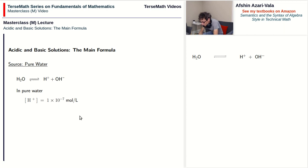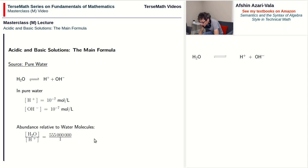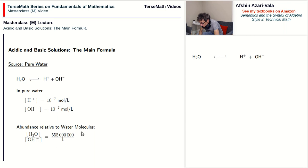In terms of how you write the numerical value, 1 times 10 to the power of negative 7 is preferred because it matches scientific notation. Infrequently, people drop the 1, which is okay, but it's better to keep it. In terms of abundance relative to water molecules, for every 1 H-plus ion there are 555 million water molecules — so there are extremely few of these ions floating around in water. Because there are equal numbers of H-plus and OH-minus ions, for every 1 OH-minus ion there are also 555 million water molecules.